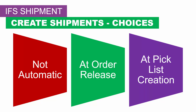The shipment creation parameter specifies whether shipments should be created automatically when releasing the customer order or when creating a pick list. The default value is not automatic. Not automatic means no shipment is automatically created — use this setting to manually handle shipment creation. If set to at order release, a new shipment is automatically created at the time of releasing the customer order, and all order lines are connected. If set to at pick list creation, a new shipment is automatically created at the time of executing either the create pick list for a specific order or the create consolidated pick list.